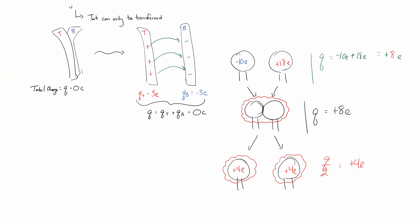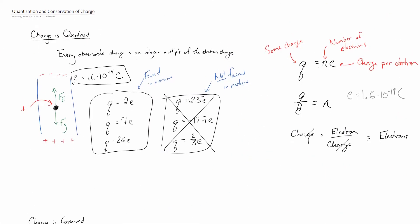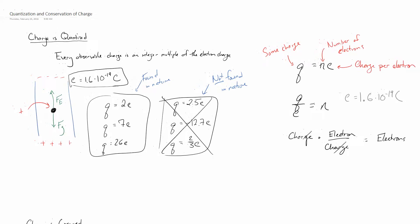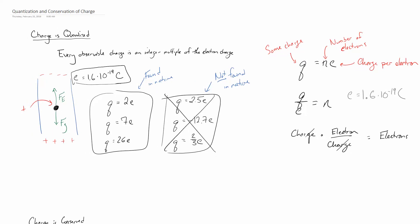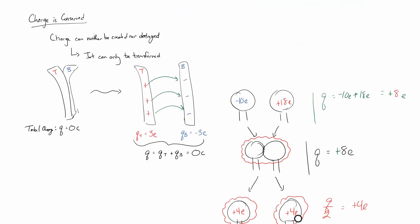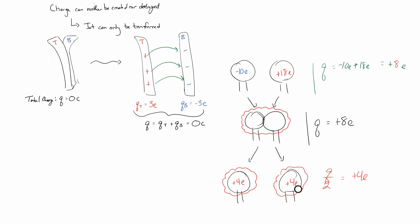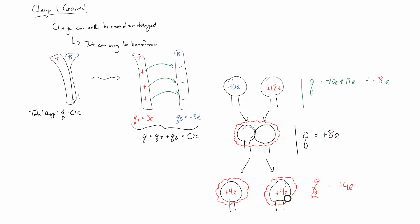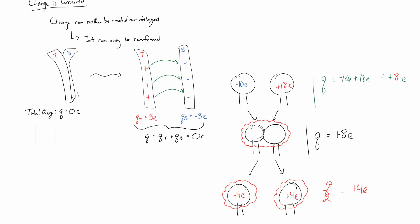So, two big ideas here: charge is quantized — every observable charge we see in nature is an integer multiple of the electron charge, 1.6 times 10 to the negative 19th coulombs. And charge is conserved — it can neither be created nor destroyed, so we're always just moving charge around. For a closed system, the total charge has to stay constant, just like with energy.